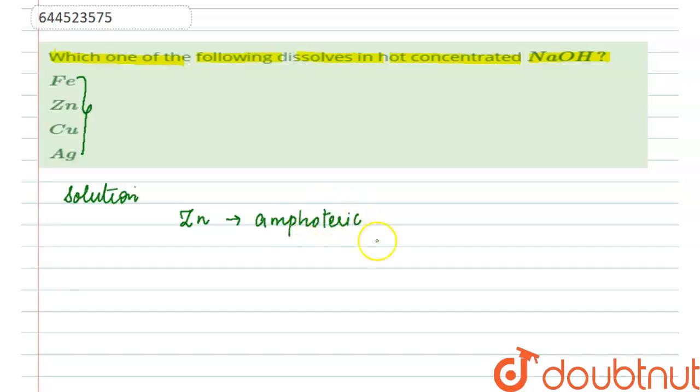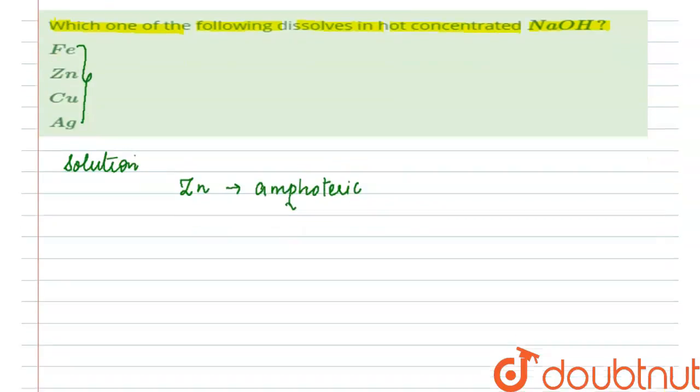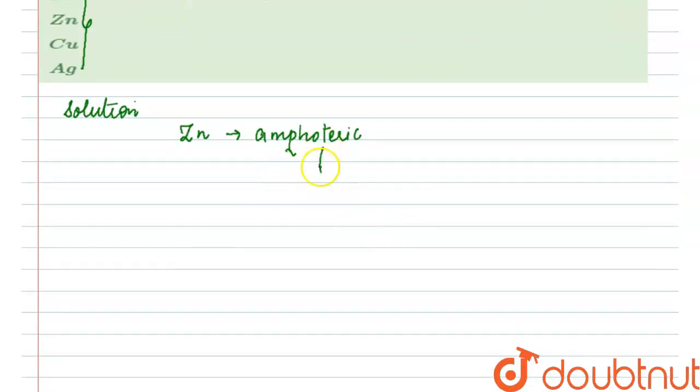Now what is amphoteric? Amphoteric are those which can dissolve in both acids and bases.